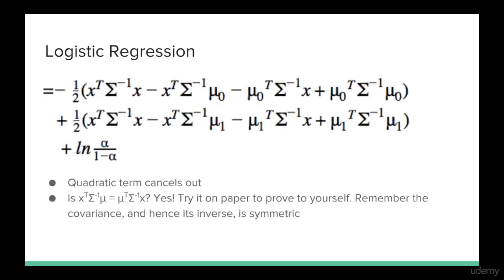Notice that the quadratic terms cancel out. That's where you see the x twice. Now you might think that if you see x transpose sigma inverse mu, it's not the same as mu transpose sigma inverse x, and it's good to be careful with things like this. But I would highly recommend trying it yourself on paper to prove to yourself that they are equal. Remember that the covariance and its inverse are symmetric.